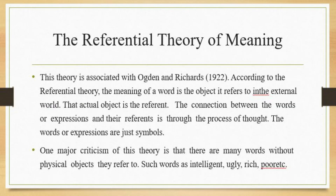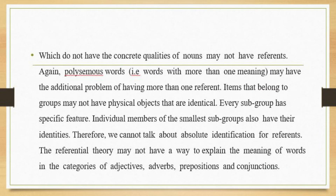The referential theory is associated with Ogden and Richards. According to the referential theory, the meaning of a word is the object it refers to in the external world. The actual object is the referent. The connection between words and expressions and their referent is through the process of thought; words and expressions are just symbols. A major criticism is that there are many words without physical objects they refer to, such as 'intelligent,' 'ugly,' 'rich,' and 'poor,' which do not have concrete qualities of reference. Polysemous words — words with more than one meaning — also present additional problems.